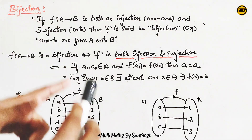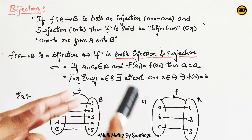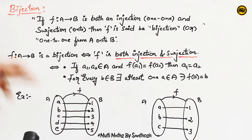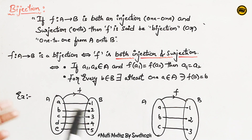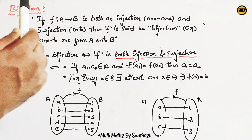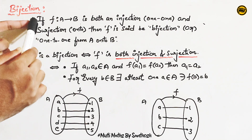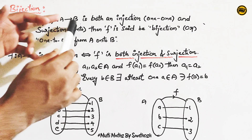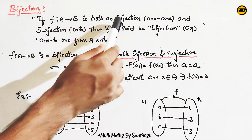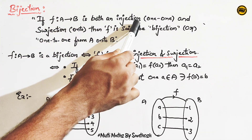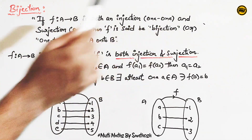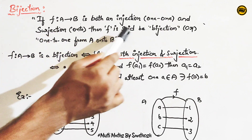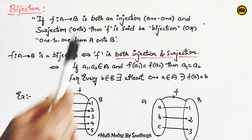If you have a one-one function and an onto function, and if f from A to B is both an injection and a surjection, then f is said to be a bijection.